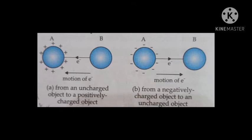These charges can be made to flow between two objects by connecting them with a metallic wire. For example, take a positively charged object A and connect it through wires to an uncharged object B. The electrons move from B to A because object A has fewer electrons, to balance the deficit of electrons in object A.